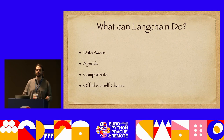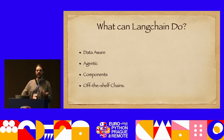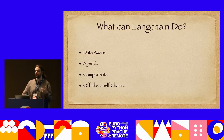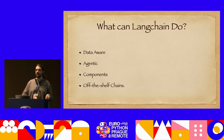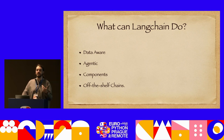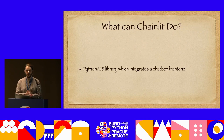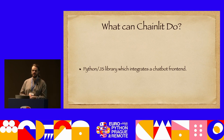We software engineer with tools like LangChain. LangChain is a data-aware and agentic way to compose large language model calls — you call the output of one model as the input to your next. LangChain provides components and off-the-shelf chains. This is a powerful initial way of getting started building these large language model apps. And what does Chainlit do? Chainlit is a Python and JavaScript library that integrates the chatbot frontend. Let's look at a demo.